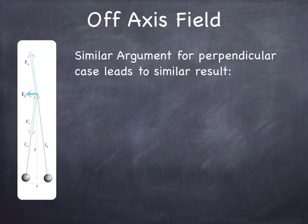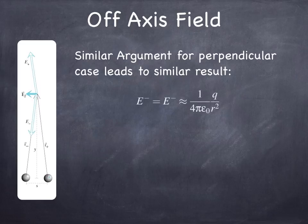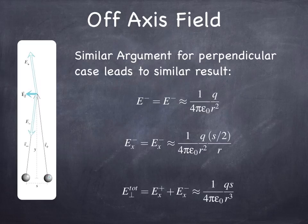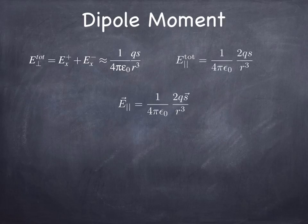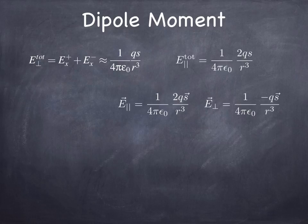You can do a similar calculation for the off-axis dipole field, and you get a similar result. The difference here is that now it goes like just q times s over r cubed, not 2qs over r cubed. The other difference is, while the parallel field pointed in the same direction as the line going from the minus charge to the plus charge, the perpendicular field points in the opposite direction. So we end up with the result that e parallel is 2 times qs over r cubed, and e perpendicular is minus qs over r cubed.